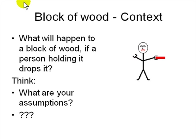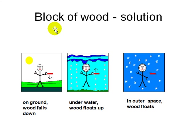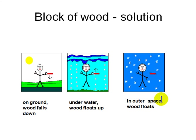Let's look at another example of out-of-box thinking. A person is holding a block of wood in their hand and then lets it go — what will happen? The first thing you need to figure out is your assumptions. The first assumption is that the wood falls to the ground. But if the person is underwater, the wood will float up. If the person is in outer space, the wood will just float around them.